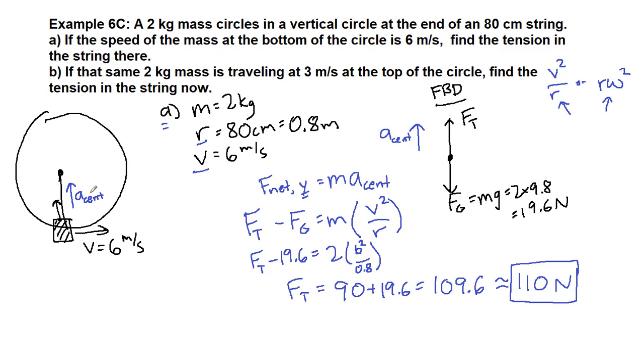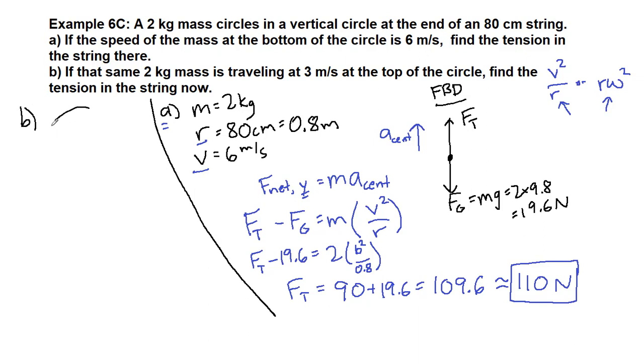All right, part b. Part b is now saying that instead of having it at the bottom, so I'm going to erase this picture. All right, so for part b we have the same circle and the same mass, but now it is at the top of its circle. And as it goes around tangent to the circle it is now traveling at three meters per second. So we still have mass is two kilograms, we still have that the radius is 0.8 meters, but it's going a little bit slower here at the top, three meters per second.